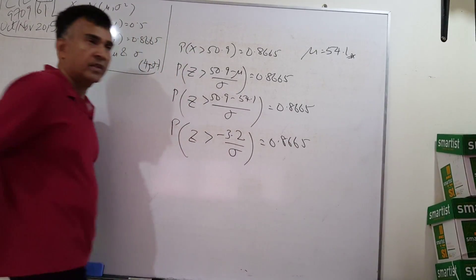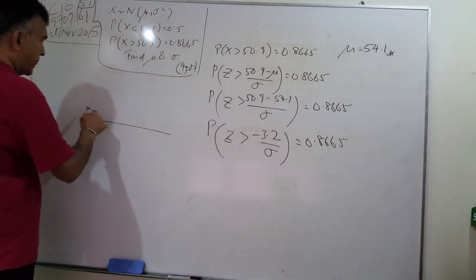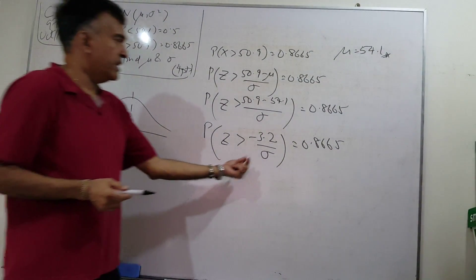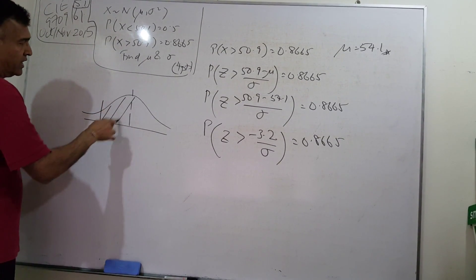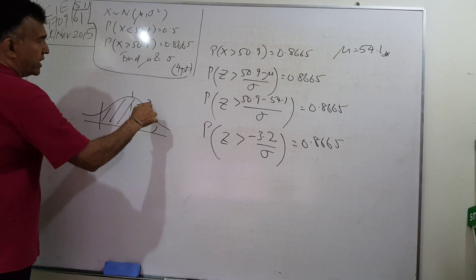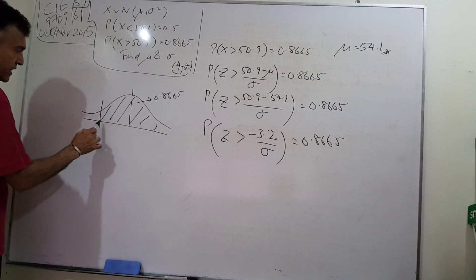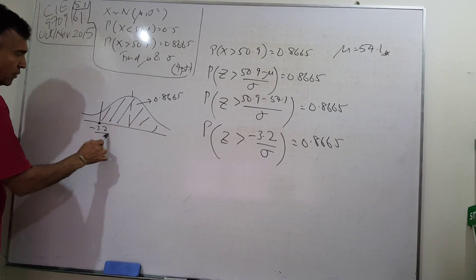We have Z bigger than a negative number equals 0.8665. Let's draw a picture. Let's shade this area, this area is 0.8665, and this value here will be negative 3.2 over σ.